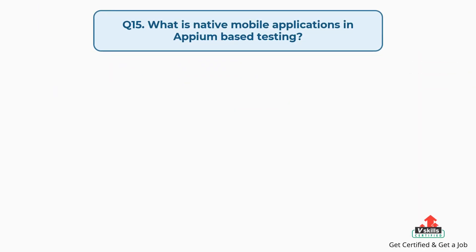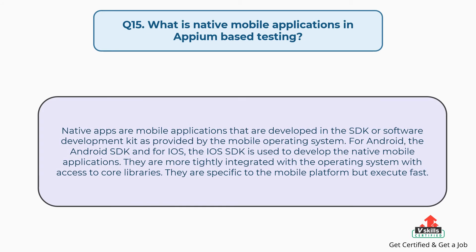Question number 15: What are native mobile applications in Appium-based testing? Native apps are mobile applications that are developed in the SDK, or software development kit, as provided by the mobile operating system. For Android, the Android SDK, and for iOS, the iOS SDK, is used to develop native mobile applications. They are more tightly integrated with the operating system with access to core libraries, and they are specific to the mobile platform but execute fast.